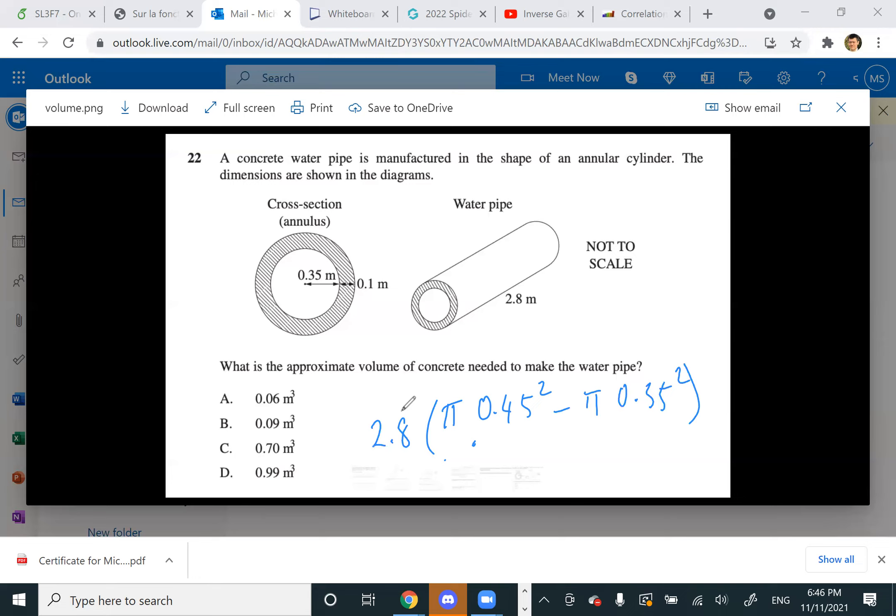How would we do this without a calculator? So you have π times 2.8, that's a difference of two squares, you get 0.1 times 0.8, so that's 0.08. So 2.8 times π is close to 9, 0.9. And then 0.8 or 0.9 is kind of like 0.7.